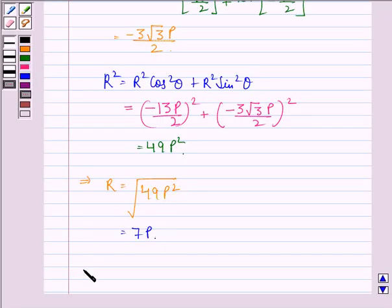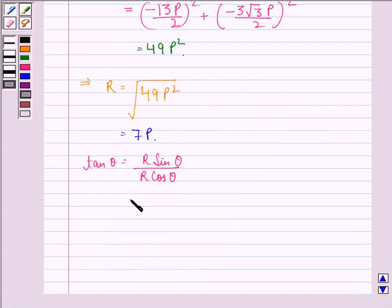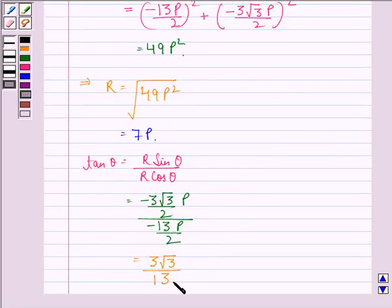Also, tan theta is given by R sin theta over R cos theta, that is equal to minus 3 root 3 over 2 p divided by minus 13p over 2, that is equal to 3 root 3 divided by 13.